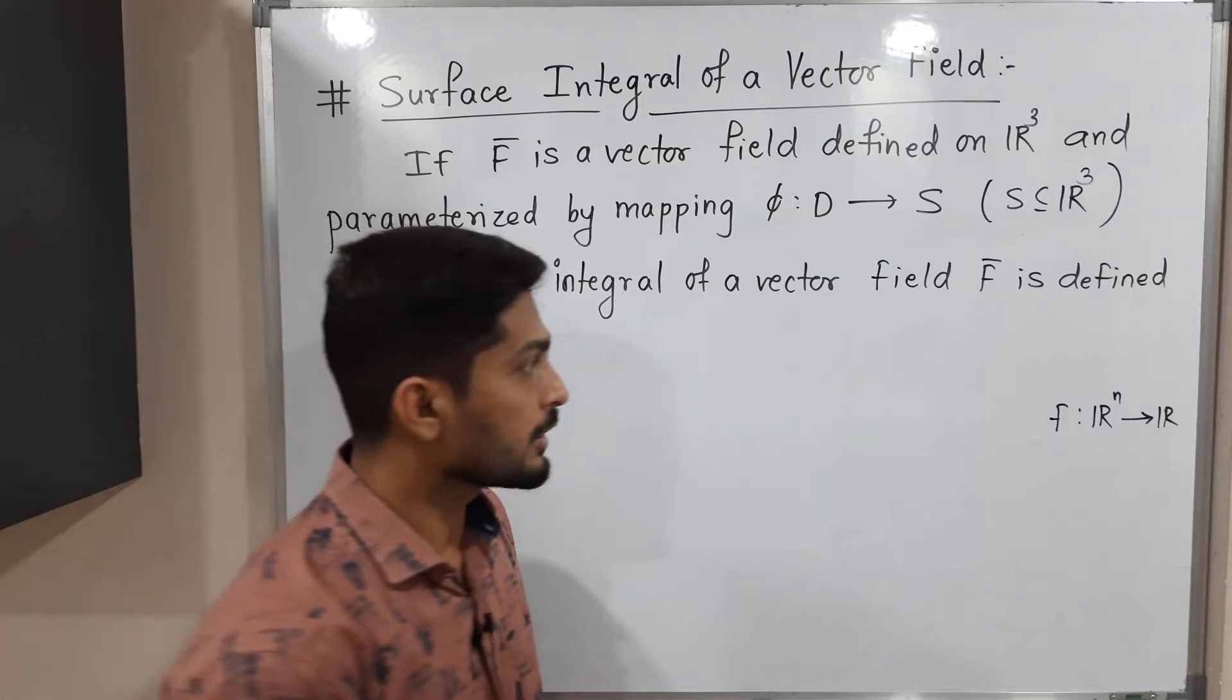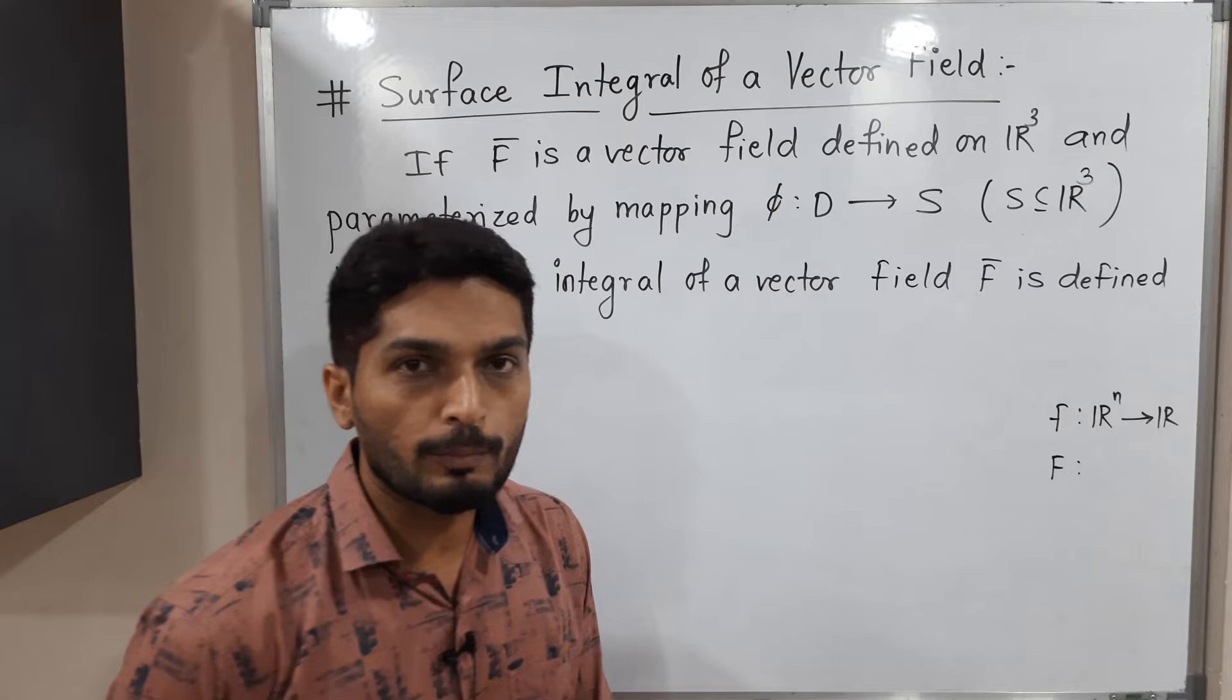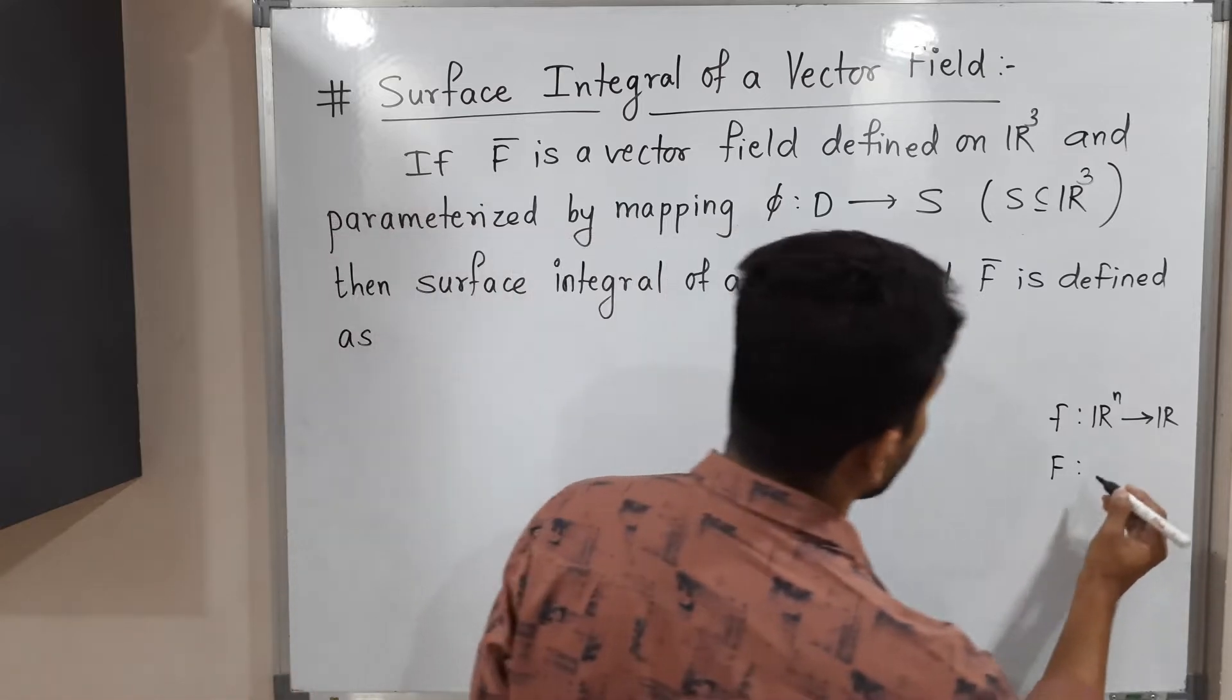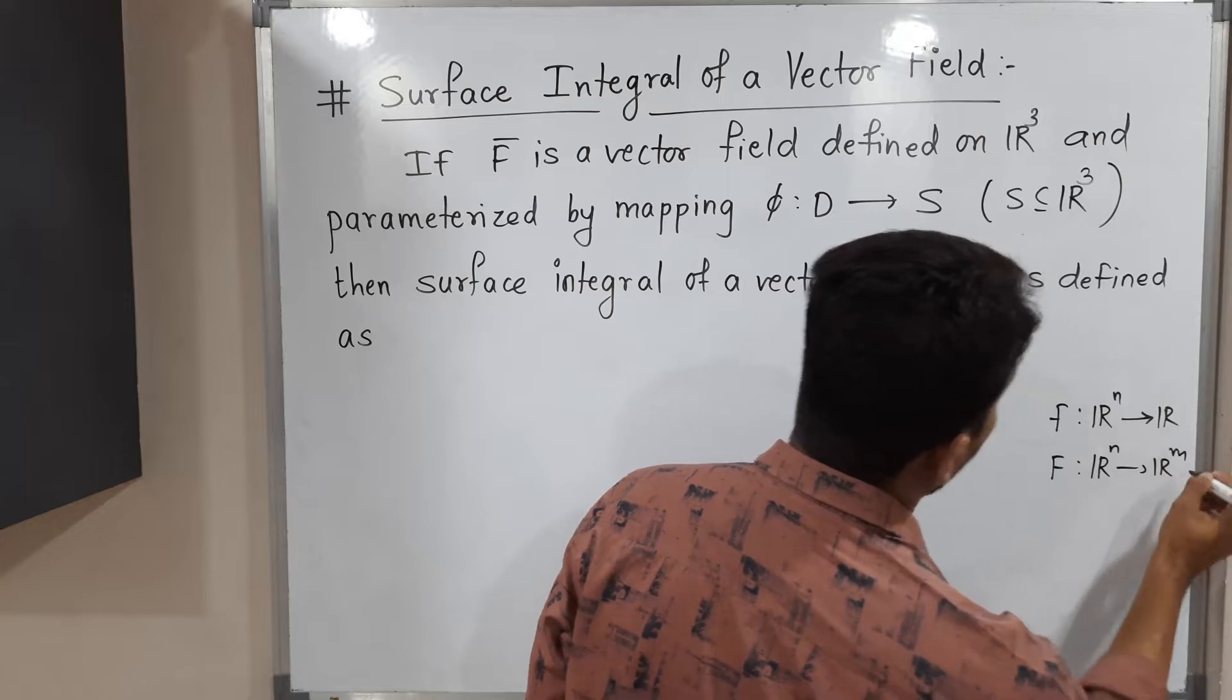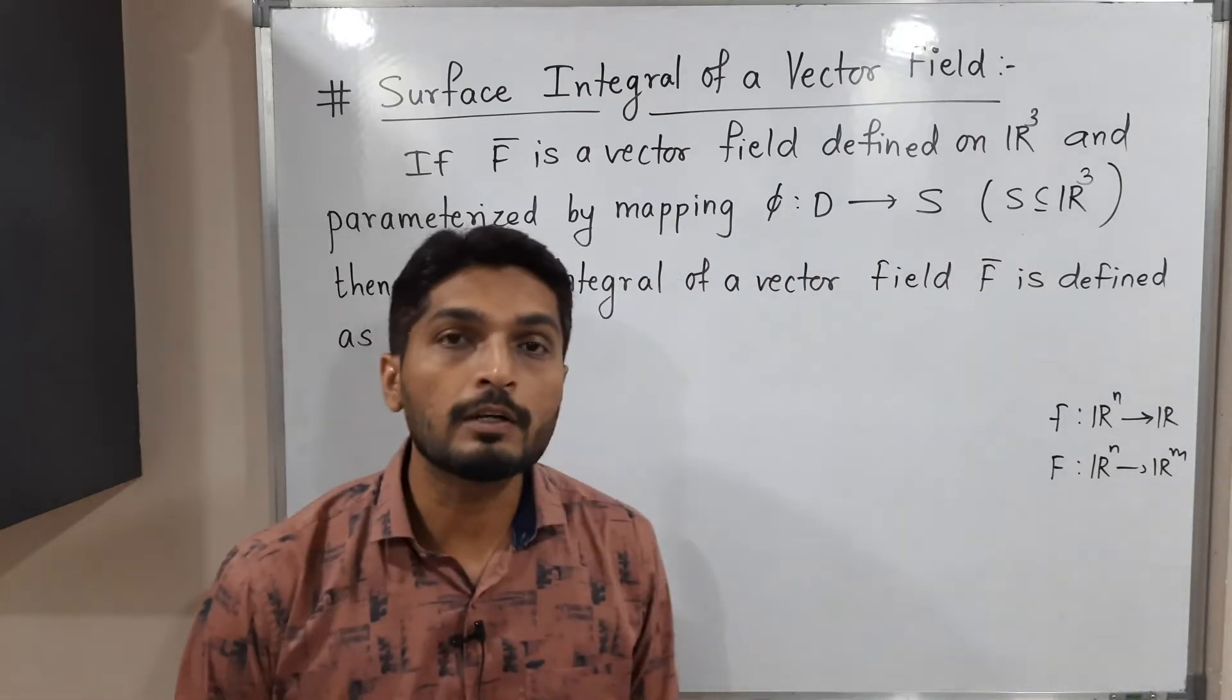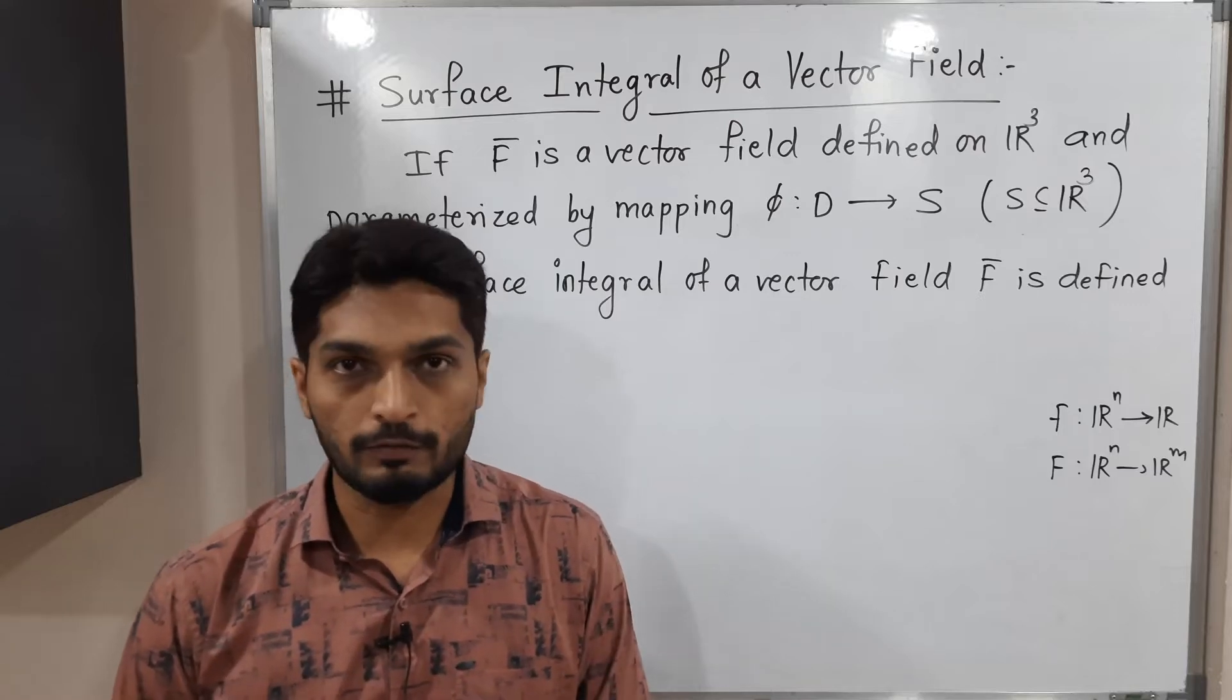And when we have a function F, normally we denote it by F and scalar field we denote by f. So if you have a function F from Rn to Rn, then we call it as a vector field. So such vector field if you have, let us see how to find a surface integral of that vector field.